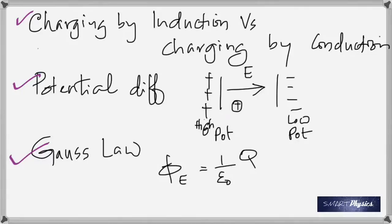Important: if nothing is specified about an EMF in a problem — for example '120 volts, 50 hertz' — that is always the RMS value. If it's peak, the problem will explicitly say 'peak' or 'maximum.' This has been emphasized throughout the course.